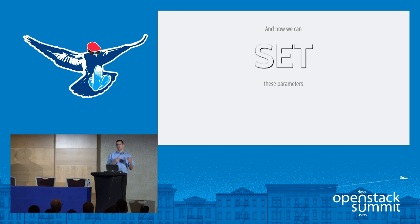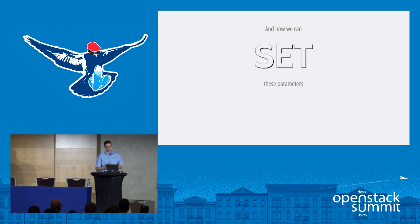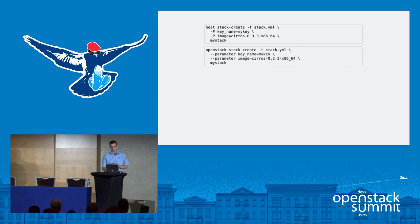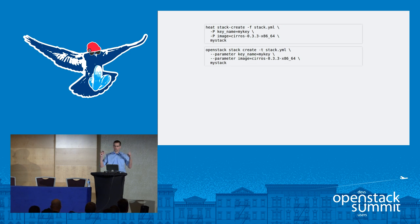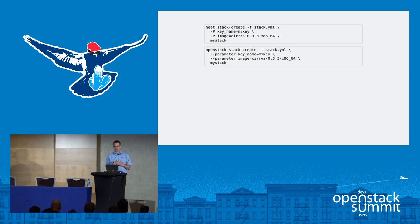Parameters can be set from Horizon — as we upload a template, it gets parsed and we get a dialog box enumerating parameters, showing descriptions as tooltips. We can inject the values we want and then launch the stack. On the command line, the legacy 'heat stack-create' used -P to set parameters, while for the 'openstack stack create' syntax you are now forced to write out the entire '--parameter' option. There's also another way: putting all parameters in yet another YAML file rather than specifying them directly on the command line.